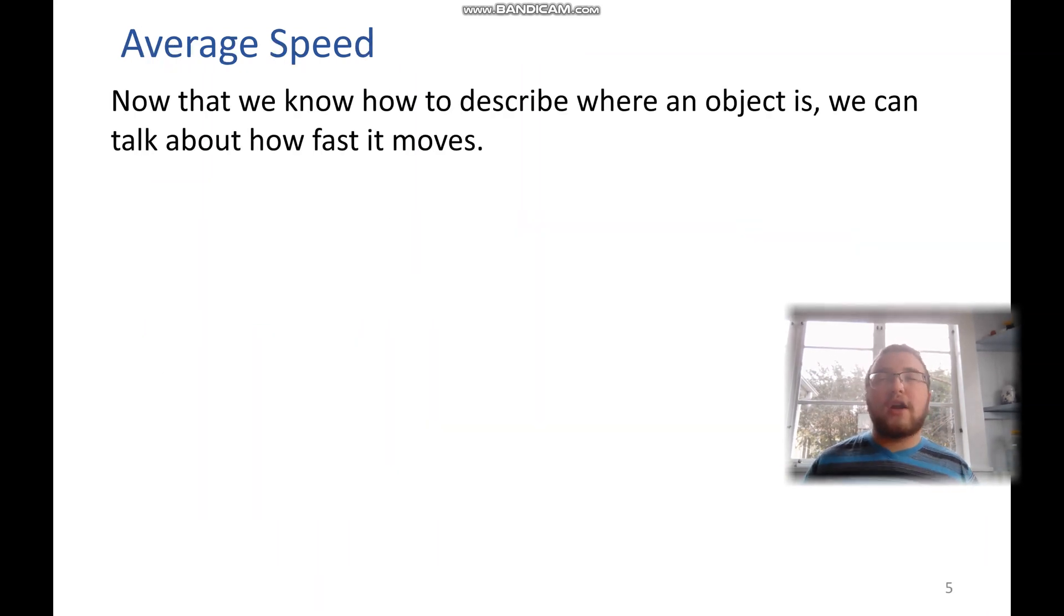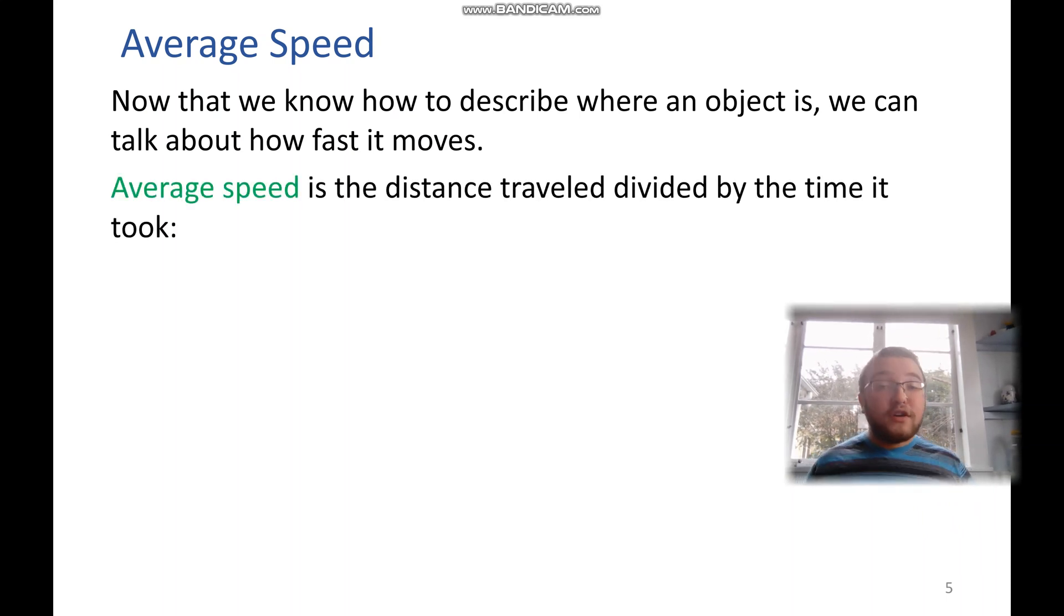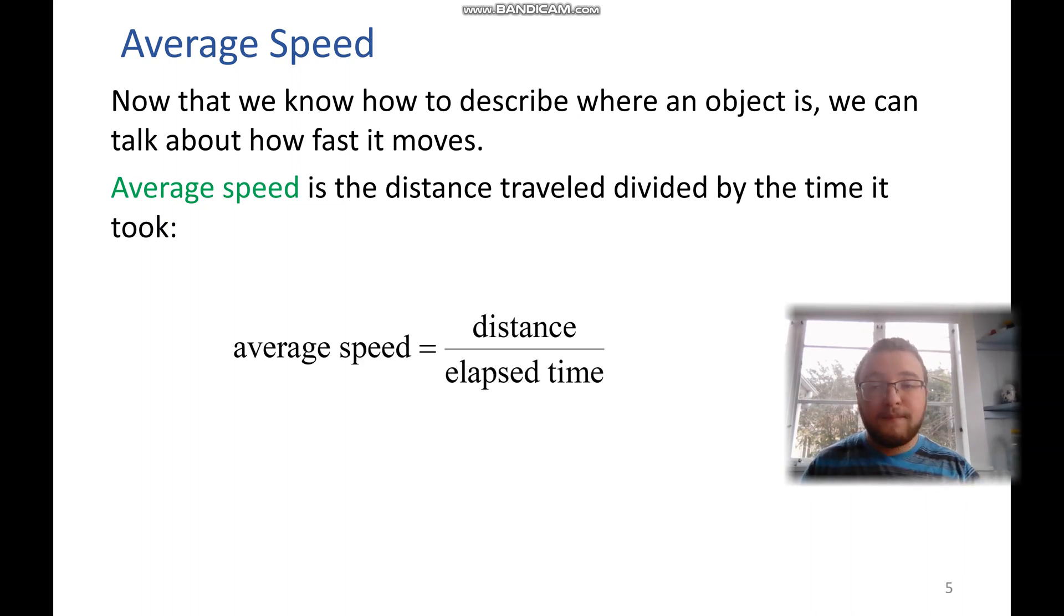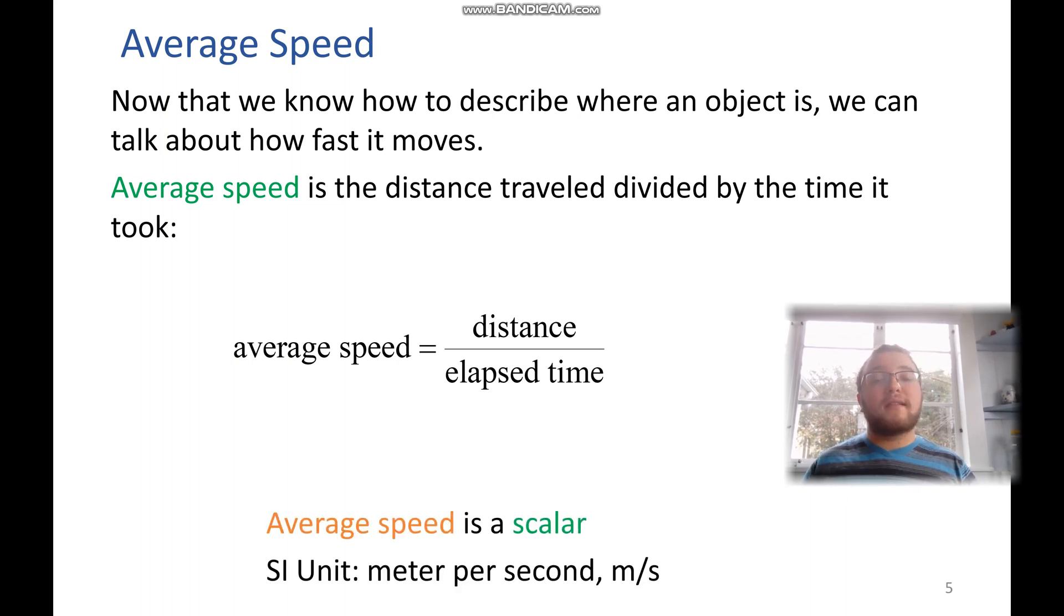So now that we know how to describe where something is, we can describe how fast it's moving. Average speed is the distance traveled divided by the total time that it took. So because it is distance and not displacement, average speed is a scalar.